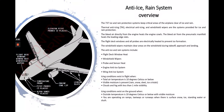We'll start with an overview of the anti-ice and rain system. To the left side here you can see a picture from EFCOM 2 with all the systems that use anti-ice and rain protection. The 737 ice and rain protection systems keep critical areas of the airplane clear of ice and rain. Thermal anti-ice, electrical anti-ice, and windshield wipers are the systems provided. Bleed air directly from the engine heats the engine cowls. Bleed air from the pneumatic manifold heats the leading edge slats. The flight deck windows and all probes are electrically heated to prevent ice formation. The windshield wipers maintain clear areas on the windshield during takeoff, approach, and landing.